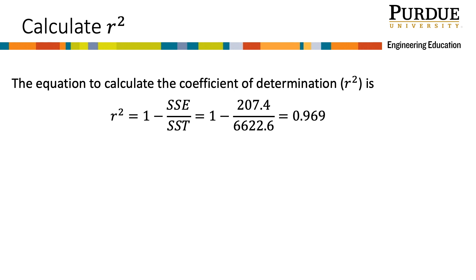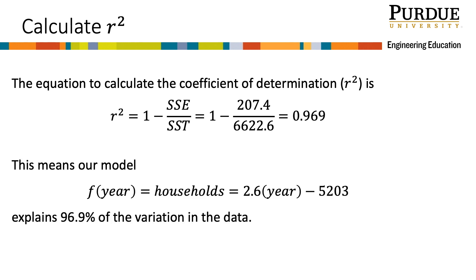This is very close to 1. So that tells us that this line models our data very well. Specifically, this means our model explains 96.9% of the variation in the data.